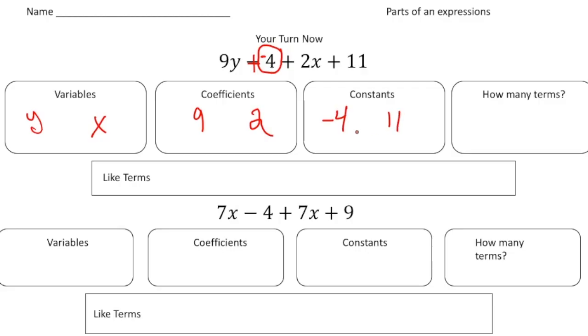How many terms do we have? Well remember, terms are divided by plus signs. So we have 1, 2, 3, 4 terms. And then finally the like terms. Well 9y and 2x are not like terms because they don't have the same variable. So our only like terms are the constants. So negative 4 and 11 are the like terms.